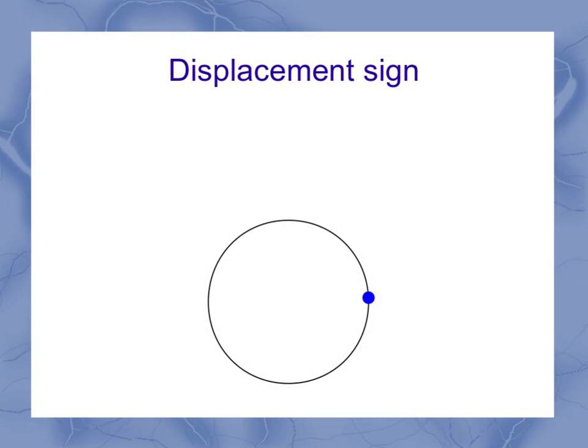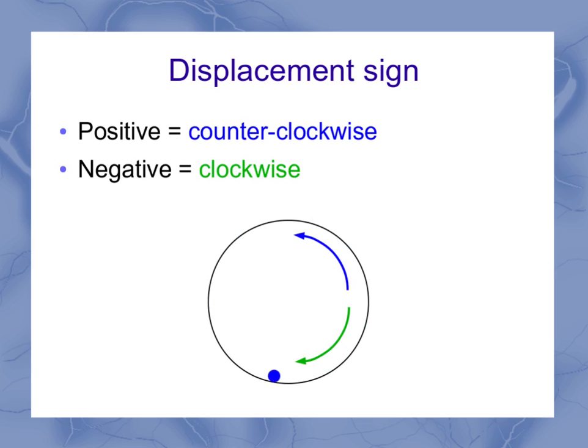When it comes to displacement, we have to care about the sign. Positive represents a counterclockwise motion, and negative represents a clockwise motion. So we get those negative positions when we have a negative displacement.